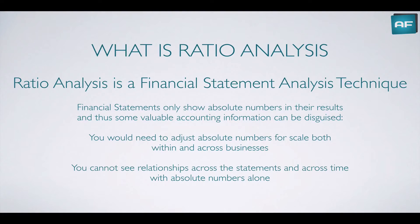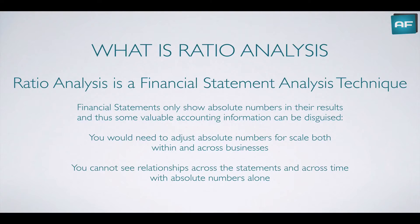Financial statements only show absolute numbers in their results, and these absolute numbers often hide or disguise some valuable accounting information. For example, you may need to adjust the absolute numbers to account for the scale of a business — both within a business and across separate businesses. A profit of a hundred in company A and a profit of a hundred in company B may look identical, but company B may be ten times the size of company A. Thus, a profit of a hundred in company A may appear more appealing, because it's doing it with less. Scale is often hidden within financial statements, and it can be difficult to see relationships across the statements and across time with absolute numbers alone.